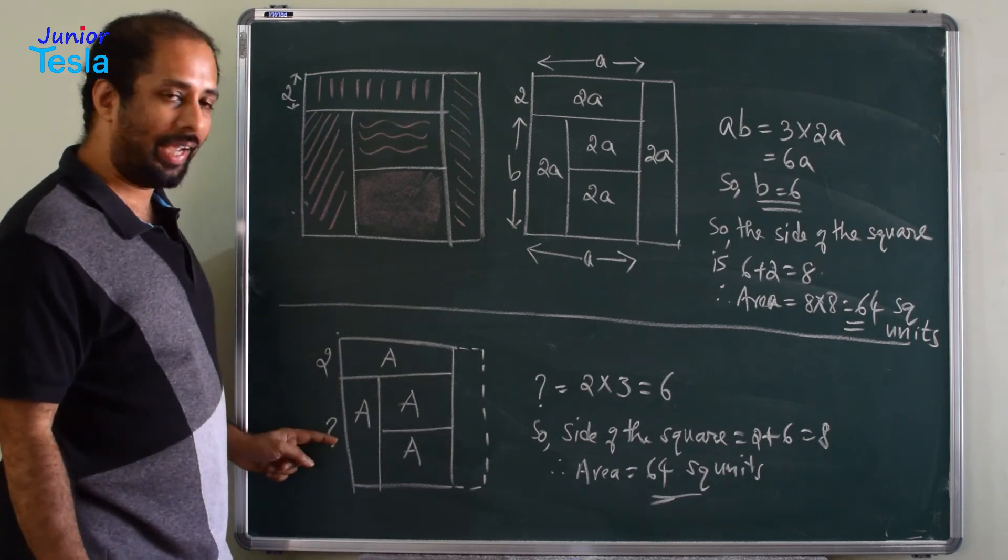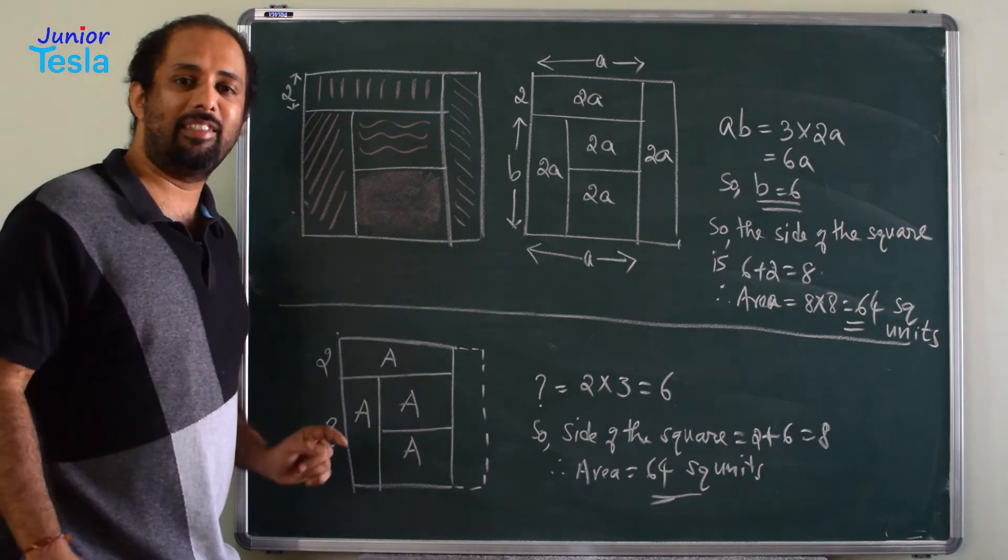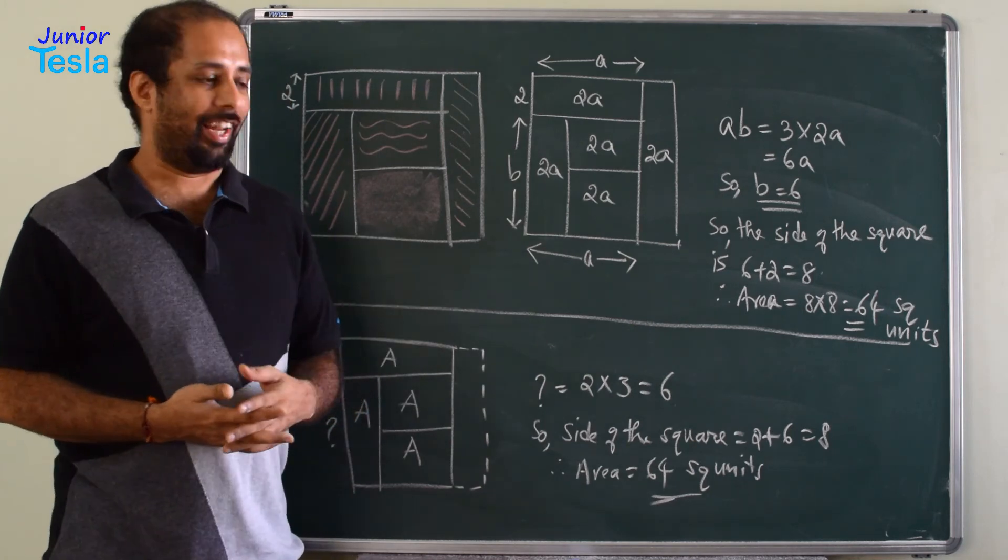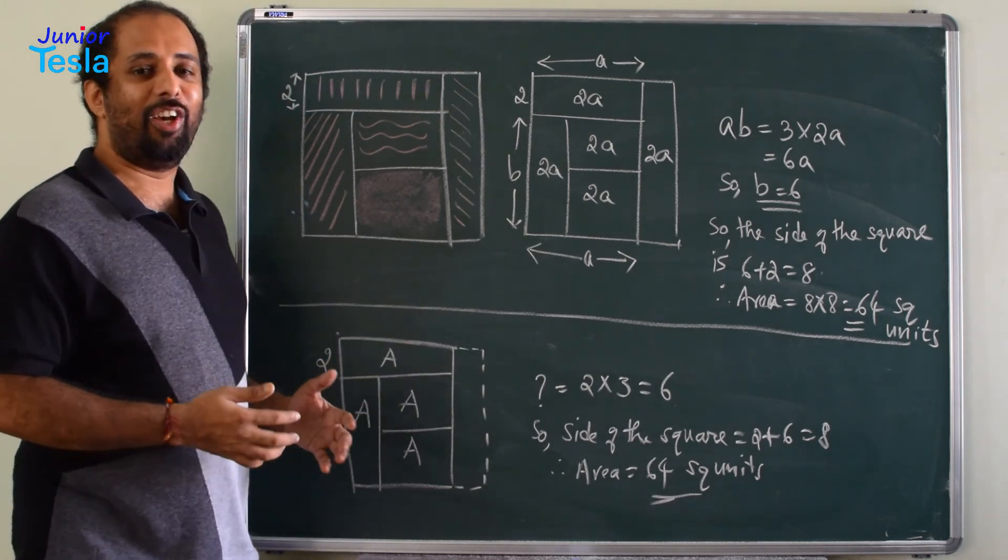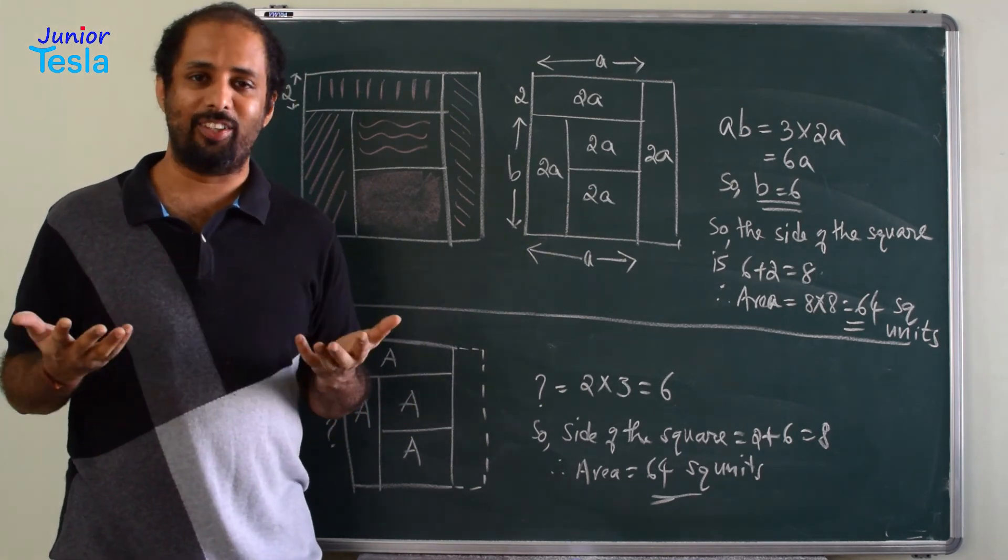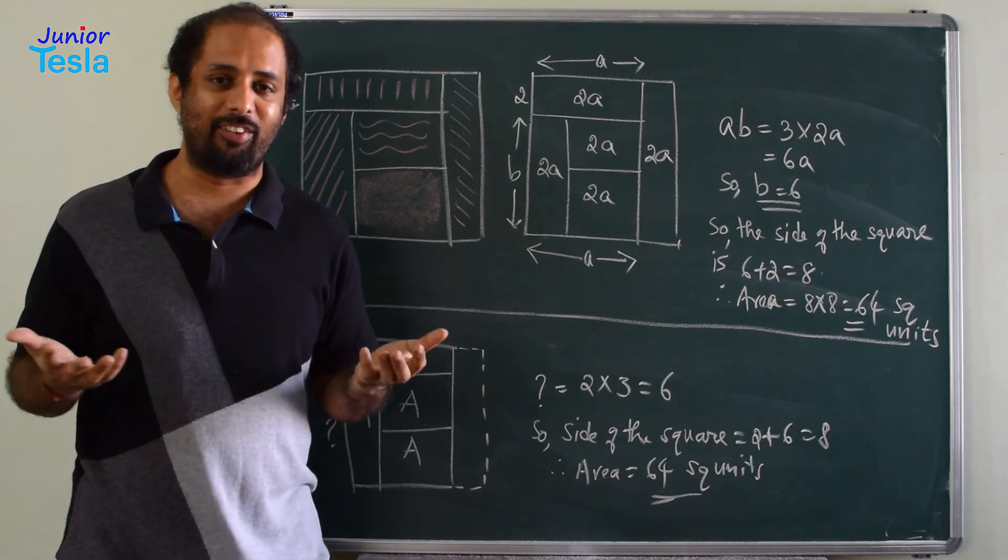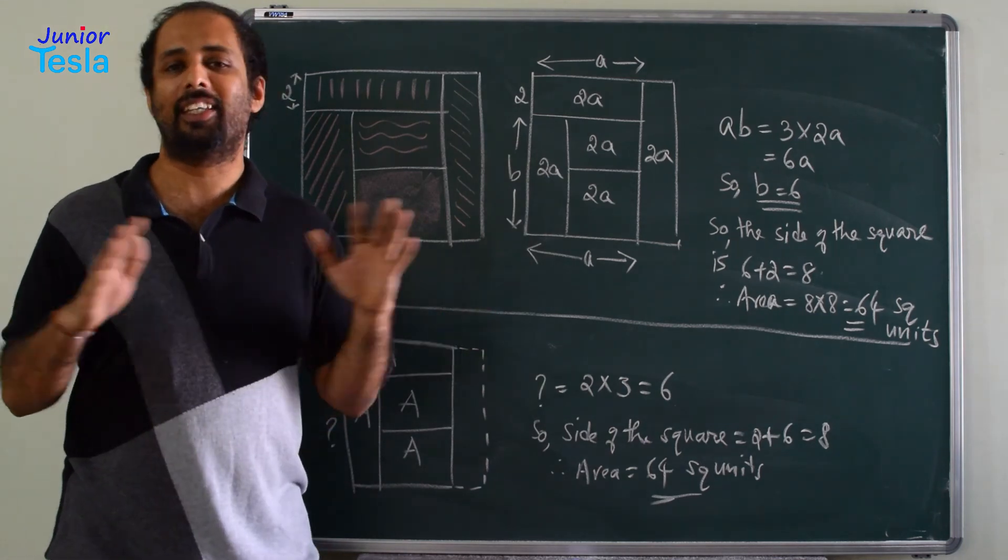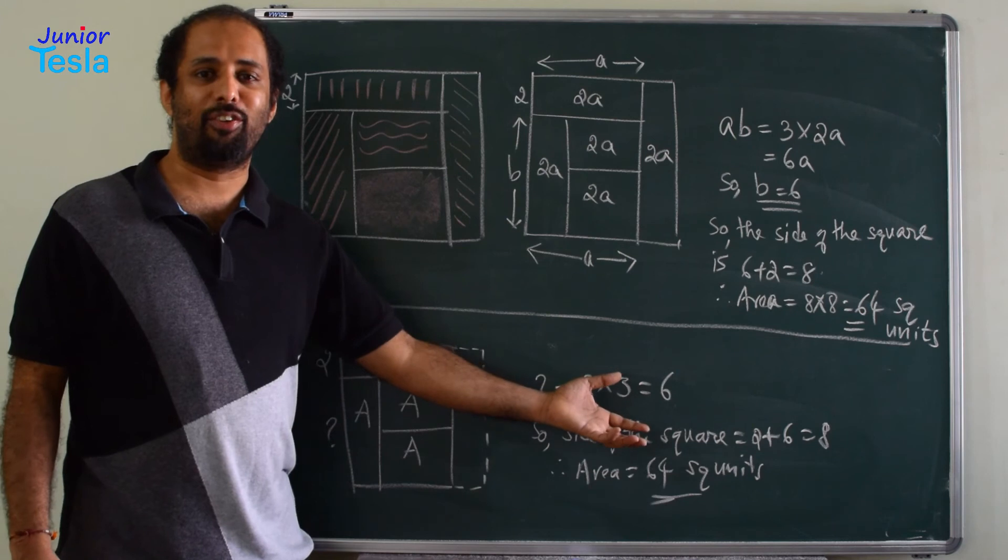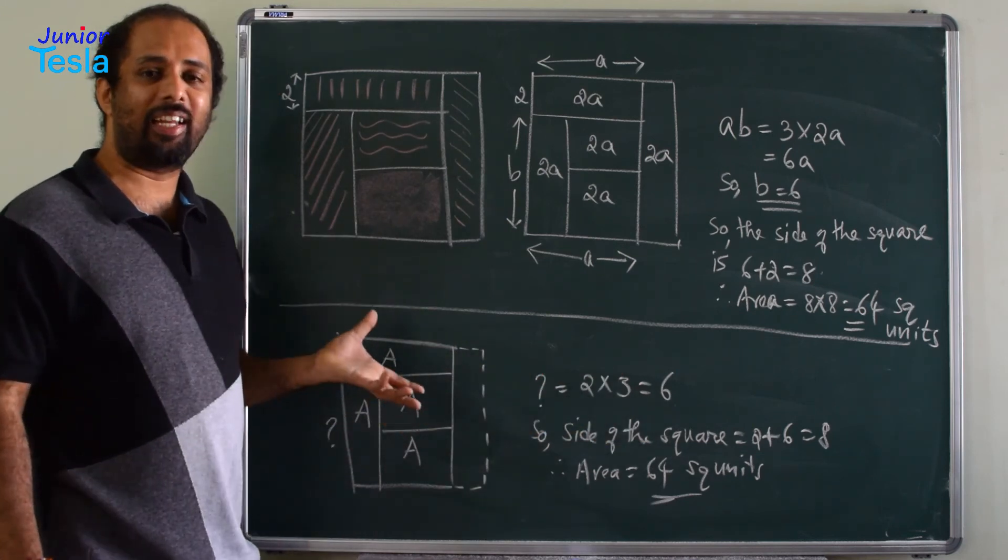Now, 2 plus 6 is equal to 8, therefore the total area is 8 square which is equal to 64 square units. Now, here in this final solution, we have not used any unknowns, we have not written any unknowns, we have not written any equations, we have not compared anything, nothing is done. We need not spend any time in writing the solution, just by analyzing we can get the answer.